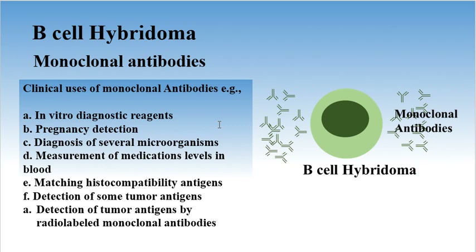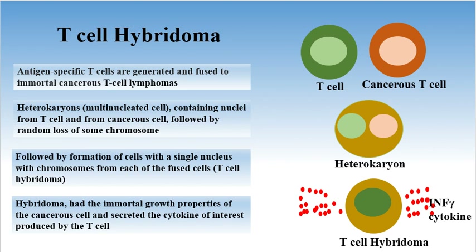Some examples include their use as in vitro diagnostic reagents, in detection of pregnancy, and in diagnosis of several microorganisms. Monoclonal antibodies can also be used to measure medication levels in blood, for matching histocompatibility antigens, and for detection of some tumor antigens by radio-labeled monoclonal antibodies.